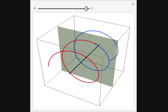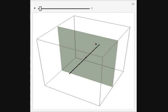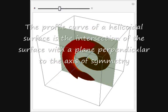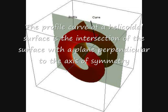A helicoidal surface is foliated by helices. Its profile curve is the intersection of the surface with a plane perpendicular to the axis of symmetry.